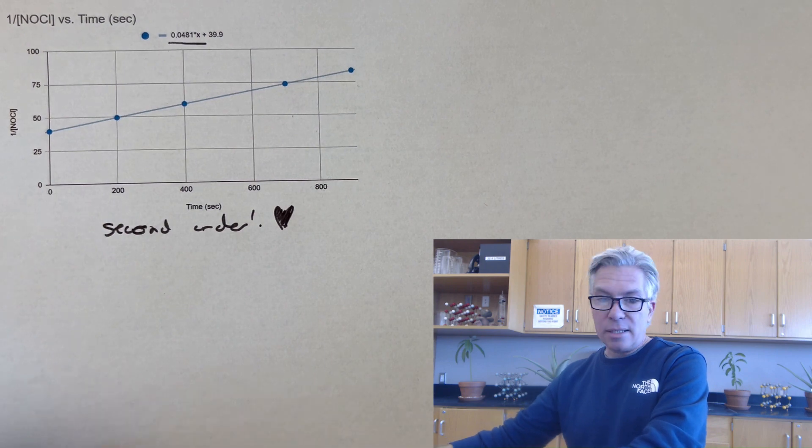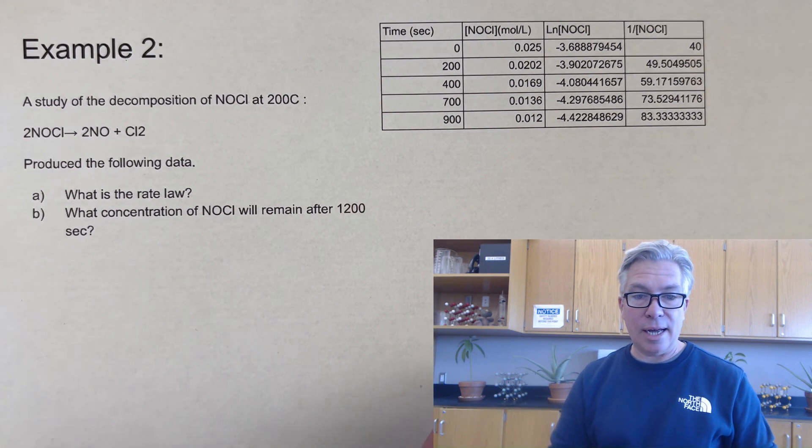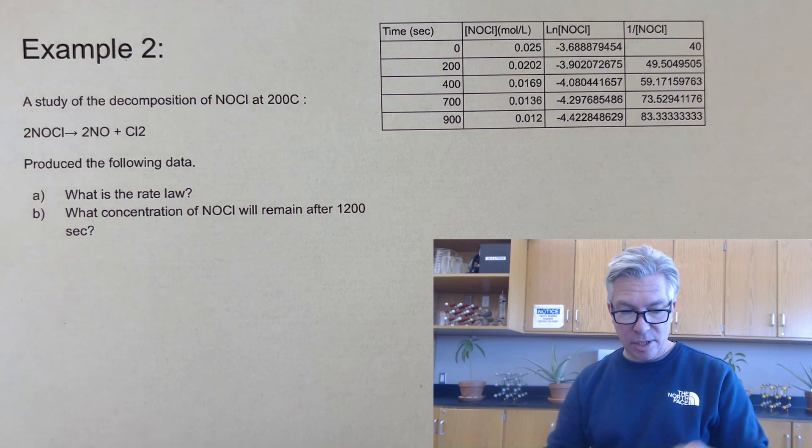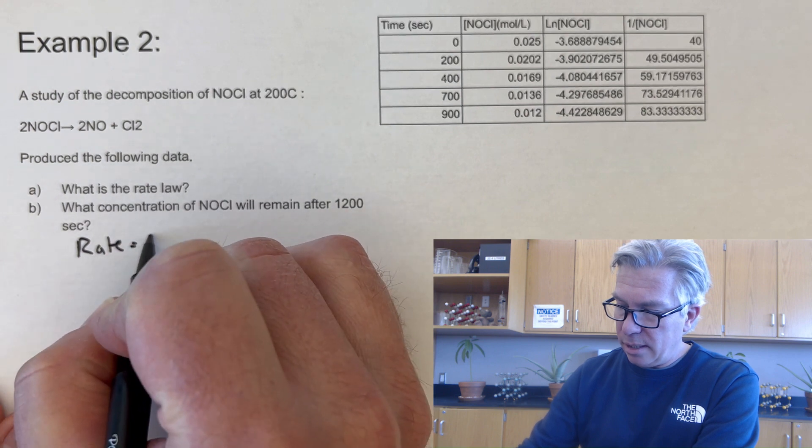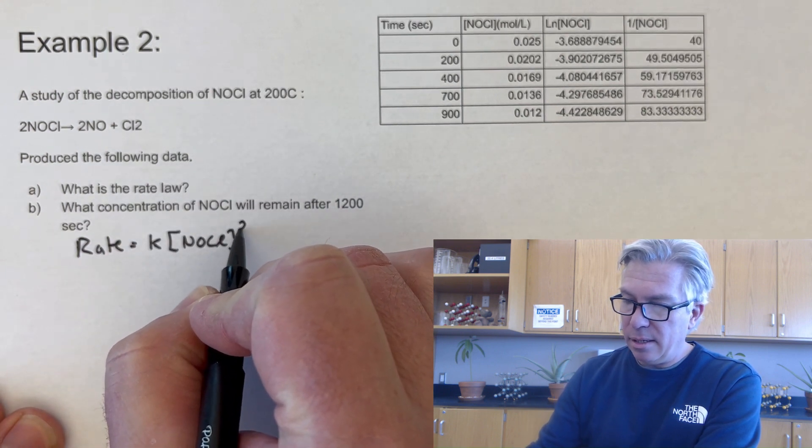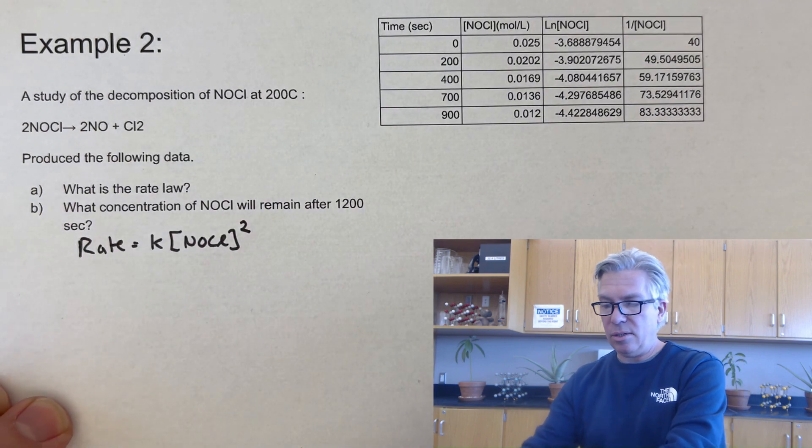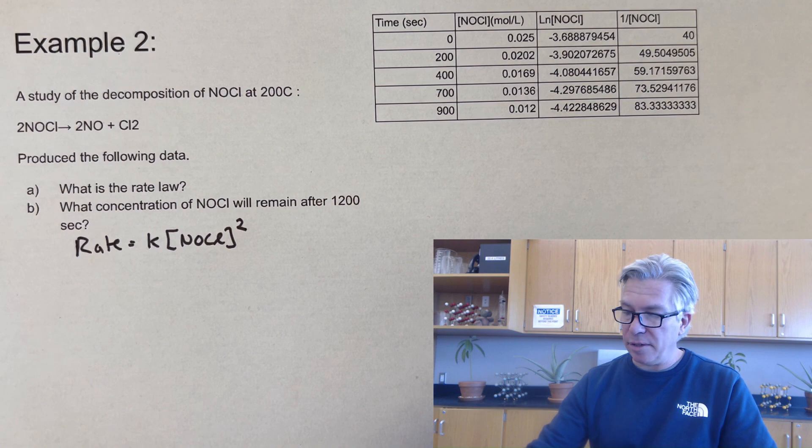Okay. So going back to the original question, it says, what is the rate law? Now that I know that it's second order, because I did my graphs, I would write rate equals a constant times NOCl. And then I'd square that. So the second order, and that would earn you the answer to that question.